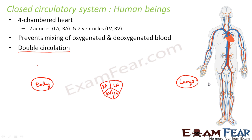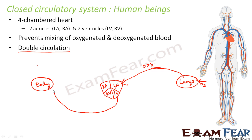The lungs take in oxygen from outside, so the blood coming out of the lungs will be oxygenated blood. L for lungs, L for left auricle — so the oxygenated blood will go to the left auricle. From the left auricle this blood will go into the left ventricle, and the left ventricle will send this oxygenated blood to different parts of the body.